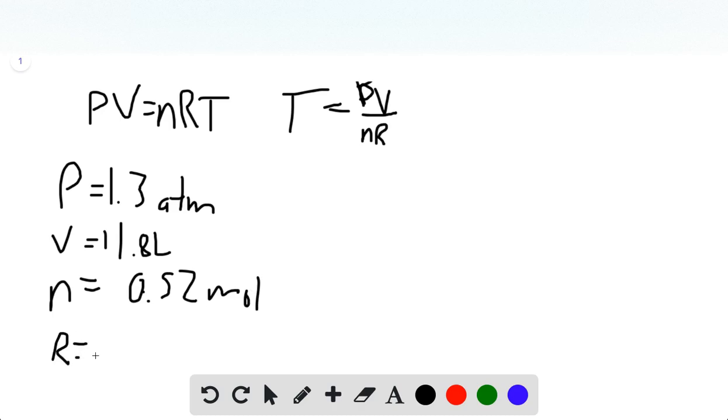And our R value is a constant, and based on the units here, that's 0.082057. And those units are liter atmospheres per mole Kelvin.